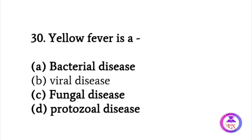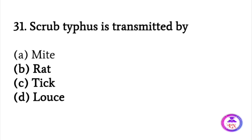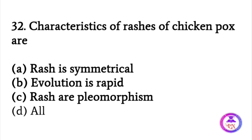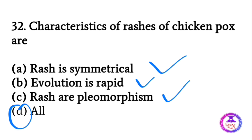Yellow fever is a viral disease. Scrub typhus is transmitted by mites. Characteristics of the rash of chickenpox are: the rash is symmetrical, evolution is rapid, and rashes are pleomorphic. So the answer is all of the above.